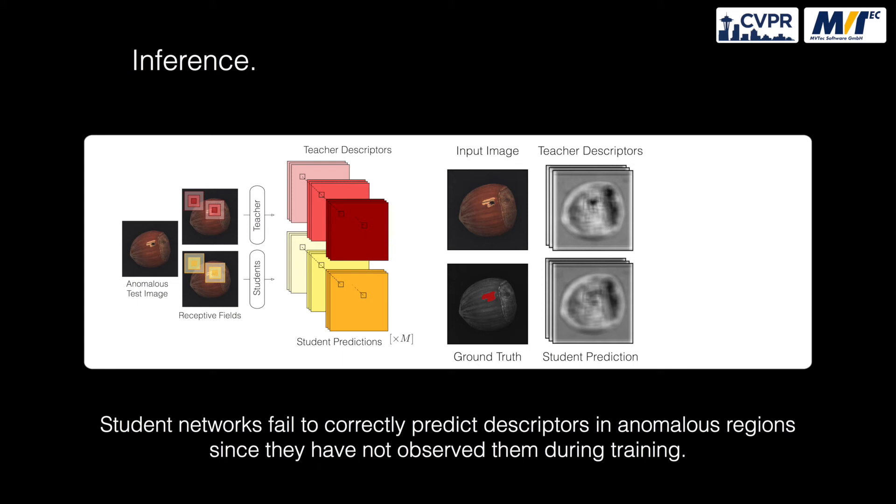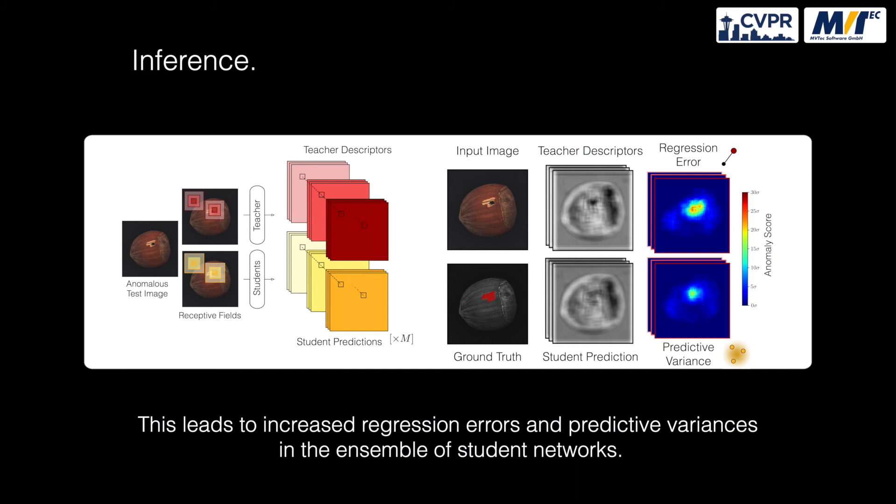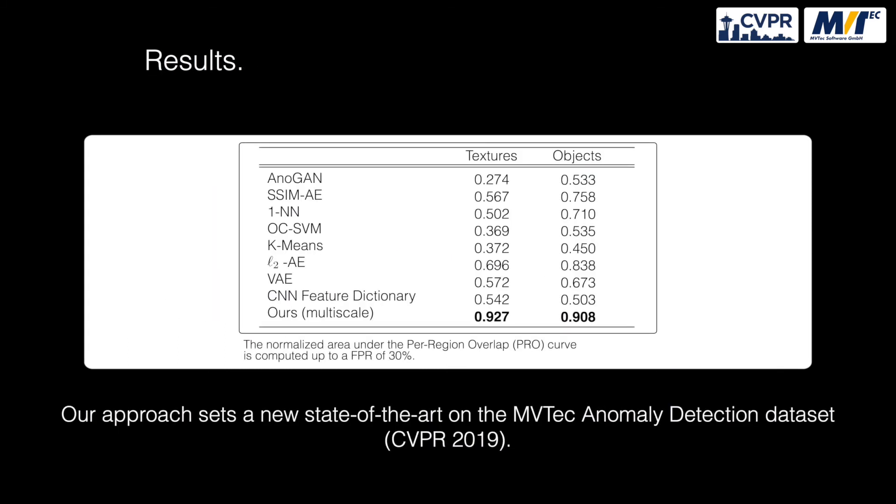Student networks fail to correctly predict descriptors in anomalous regions since they have not observed them during training. This leads to increased regression errors and predictive variances in the ensemble of student networks. Our approach sets a new state-of-the-art on the MVTec anomaly detection dataset.